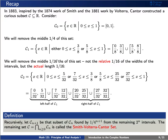Continuing in this way, let's let c sub n plus 1 be that subset of c sub n found by removing 1 over 4 to the n plus 1 from the remaining 2 to the n intervals. The remaining set, c, is what we call the Smith-Volterra-Cantor set.